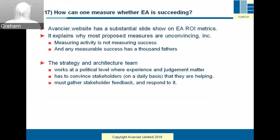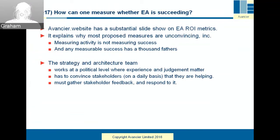How can one measure whether EA is succeeding? There's a substantial presentation on the website on ROI metrics. In my view — and this is not a very popular view — most measures are unconvincing. Measuring activity is what many people do, which is not measuring success. Any measurable success has a thousand fathers, making it difficult to attribute the success of a project or system to any particular source. The strategy and architecture team works at a political level where interpersonal relationships matter. Architects have to convince stakeholders on a daily basis that they are helping, and gathering stakeholder feedback systematically may be one way of measuring success.